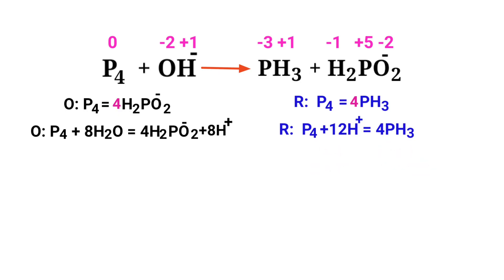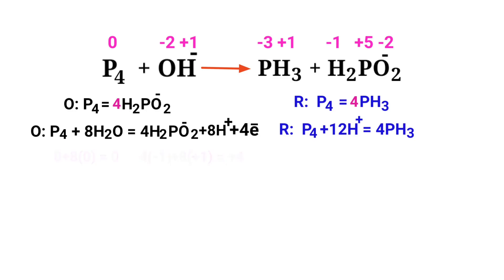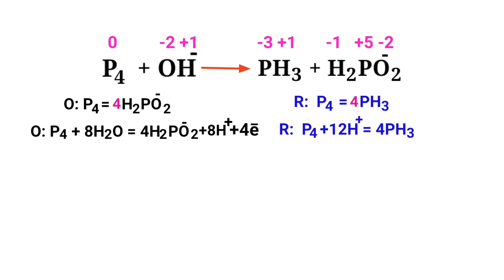For a redox reaction, the addition of charges must be equal on both sides. In the oxidation half reaction, both sides are not equal. You cannot add protons, so add four electrons to the right side to make it equal to zero. The addition of charges are now equal in the oxidation half reaction. Now balance the charges in the reduction half reaction.